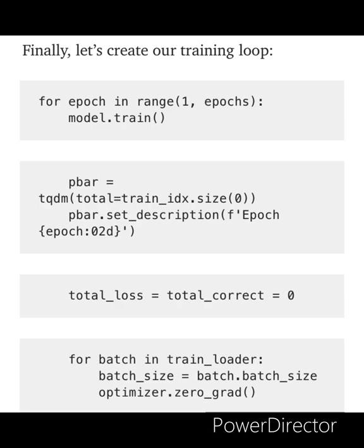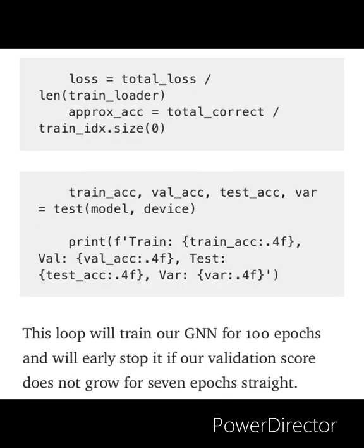Finally, let's create a training loop for the iterations in the range 1 to the number of epochs set. We set the loss to nearly 0, and we use a gradient method for optimization. This optimization method helps to converge the loss function.